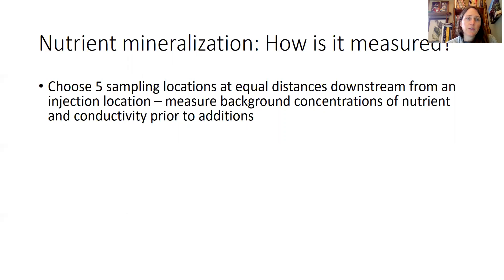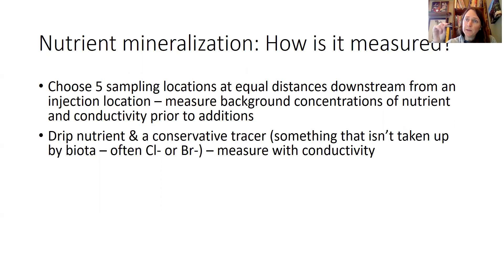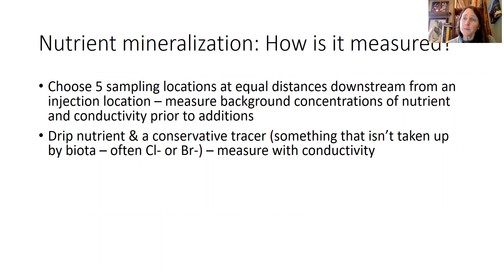To measure this, you can choose five sampling locations at equal distances downstream from a location where you're going to add some nutrients. You would measure the background concentrations of those nutrients and the conductivity of the water prior to adding. Then you would drip in your nutrient and also at the same time drip in a conservative tracer — something that isn't taken up by biota but could influence conductivity, like chloride or bromide ions.